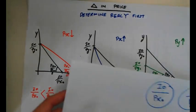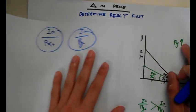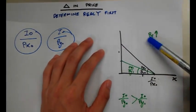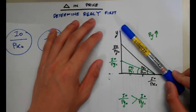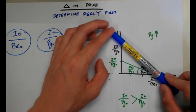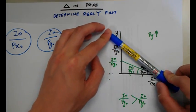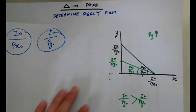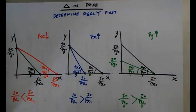This can also happen for good Y. If the price of Y has increased, the budget constraint rotates downwards. Once again, compare the real income in each case. Moving on to the change in income.